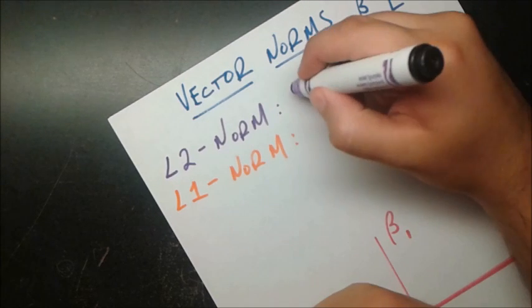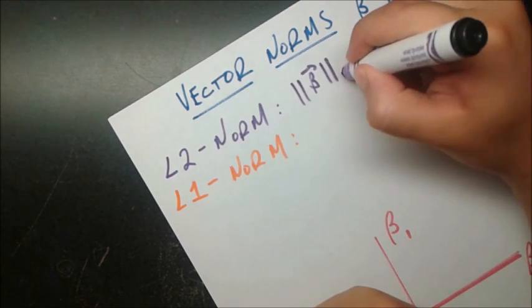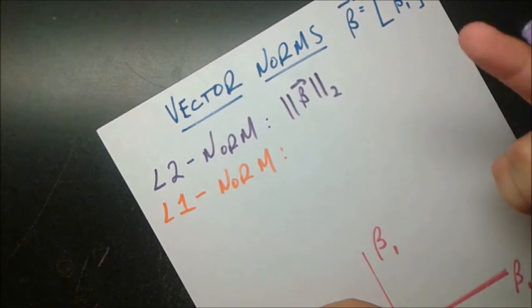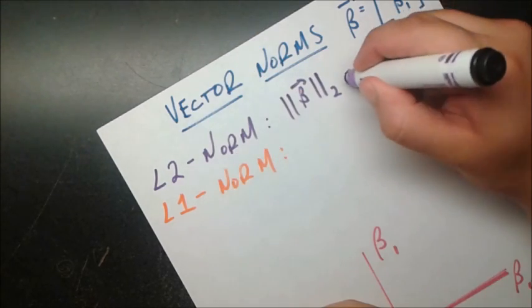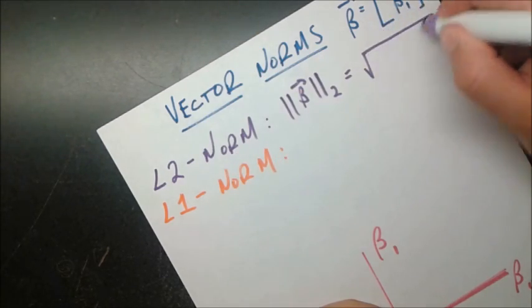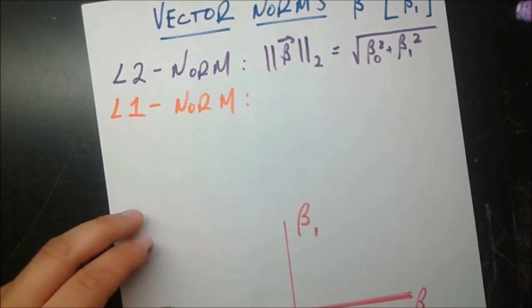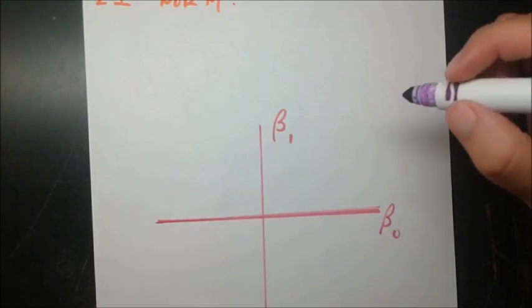So the L2 norm, which is the notation for that, is double bar. You put the vector double bar, and then you put a subscript 2 for L2 norm. Usually, they don't even put this because it's understood that it's an L2 norm. But because of the video we're making this distinction, we'll put the 2. This is simply equal to square root of beta naught squared plus beta 1 squared, also known as the Cartesian distance from the origin to these coordinates, beta naught, beta 1. So let's just draw that.